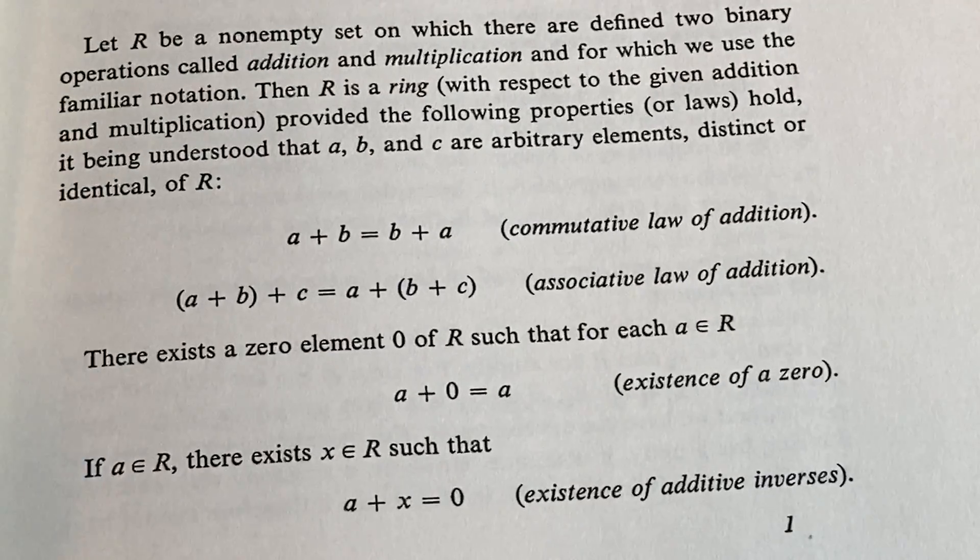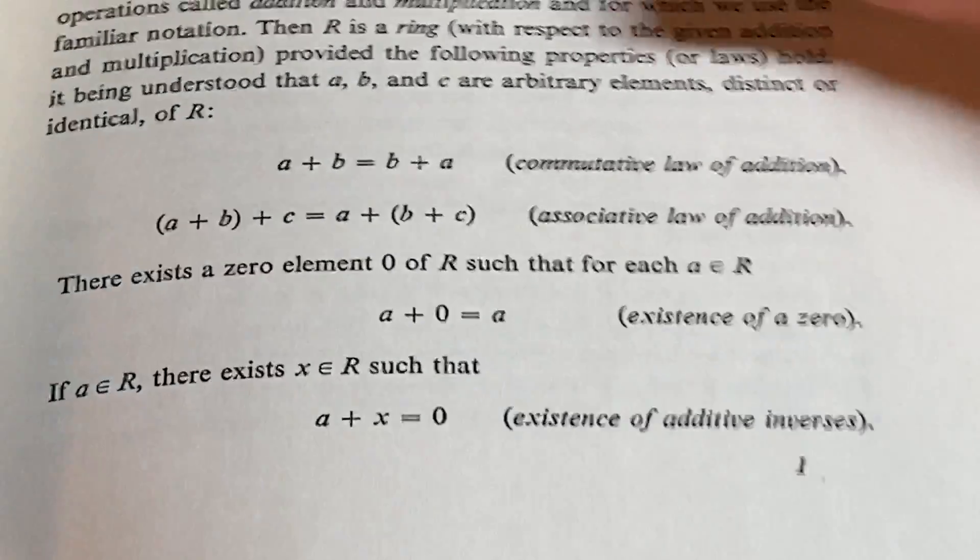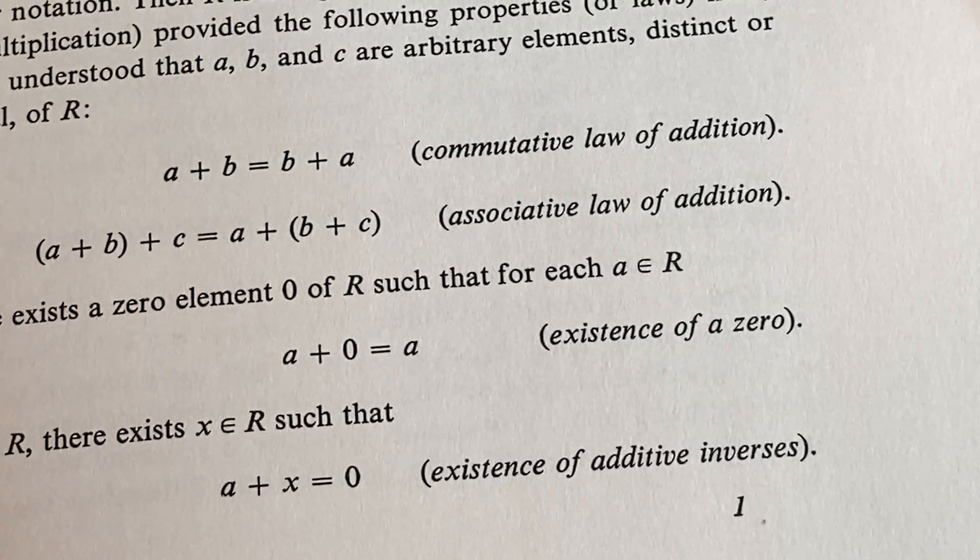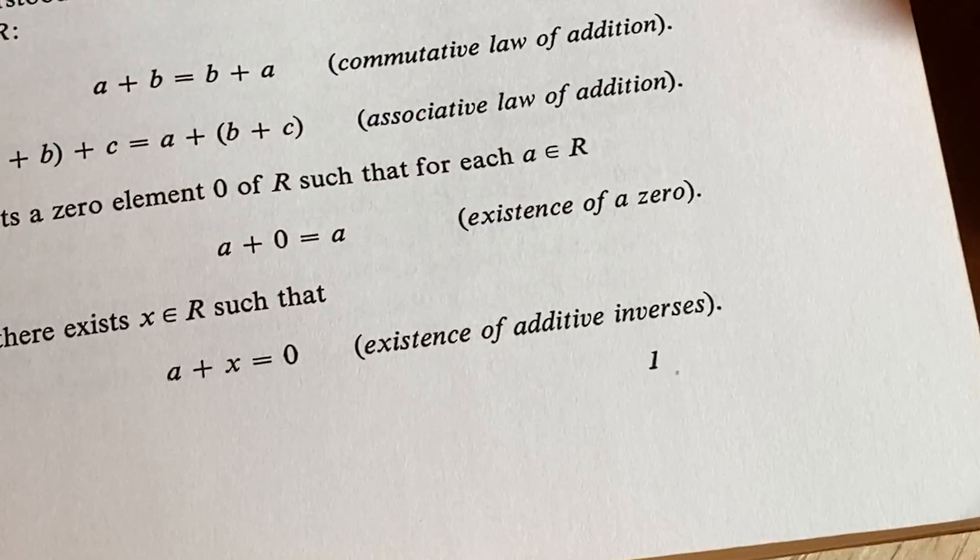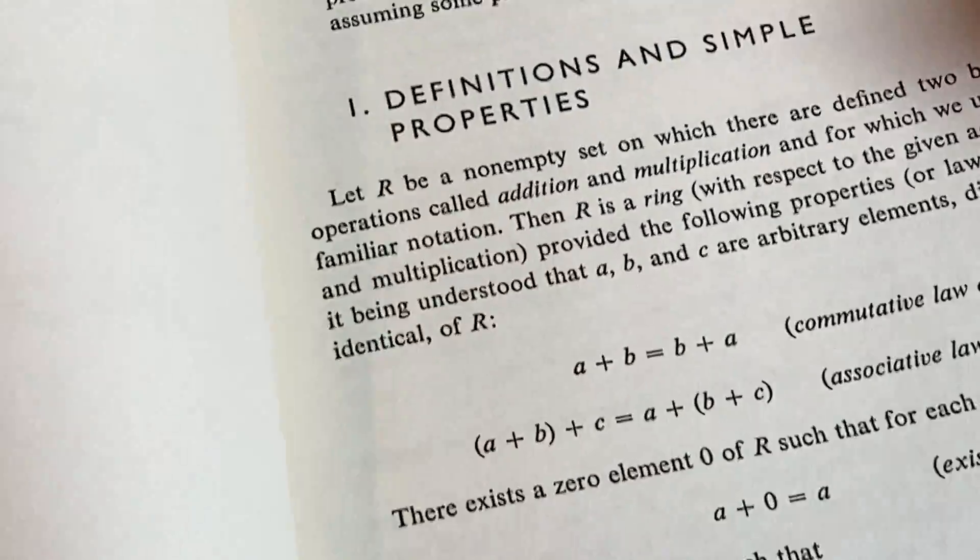A, B and C are arbitrary and distinct or identical of R, yep. So these properties hold, so you have to have commutative law of addition, associative law of addition, existence of zero, existence of inverses, additive inverses.